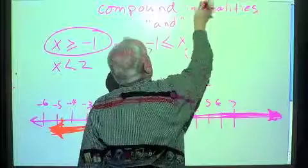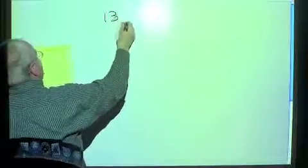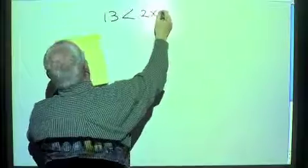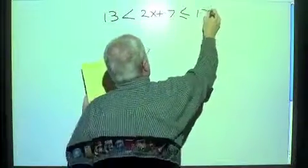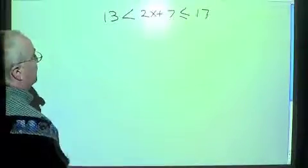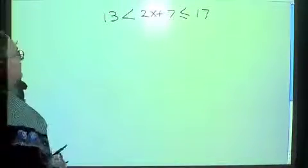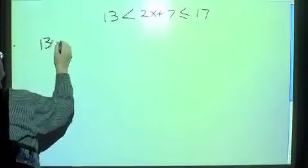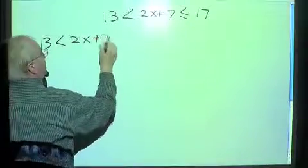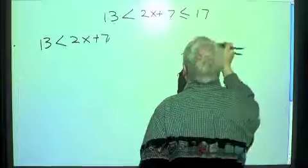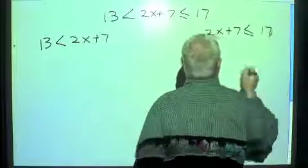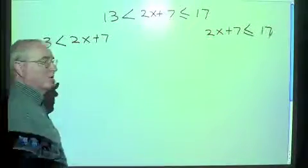Now let's do an example where we're actually solving something. Here we have: 13 is less than 2x plus 7 is less than 17. We can set this up as two different inequalities. We break it off and say: 13 is less than 2x plus 7, and then take the other portion: 2x plus 7 is less than 17. Break it up into two inequalities and solve each one.